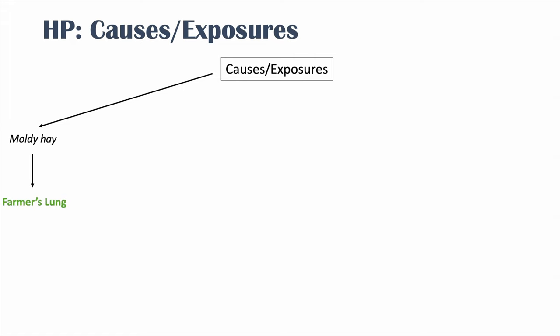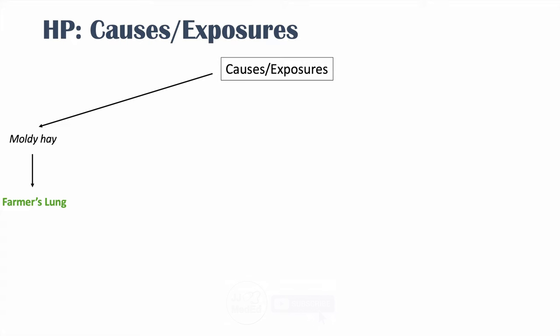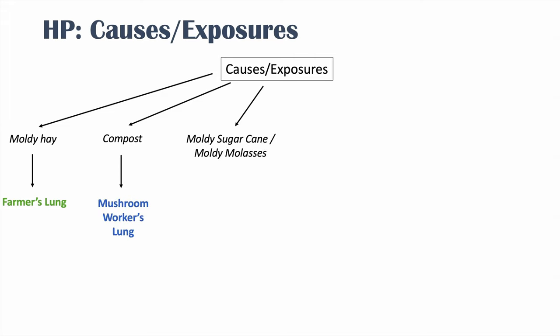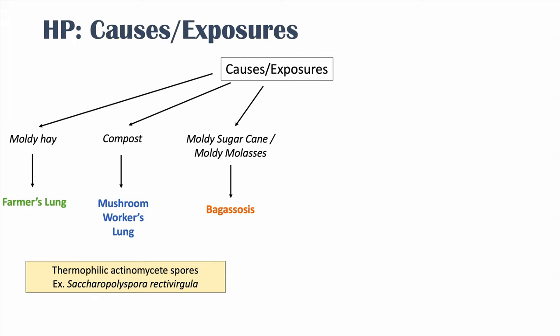One exposure is moldy hay, which leads to a condition known as farmer's lung. Another cause is compost, which leads to mushroom worker's lung. There can also be exposure to moldy sugarcane or moldy molasses, which leads to a condition known as bagasosis. All three of these involve exposure to particular thermophilic actinomycete spores — one species is known as Saccharopolyspora rectivergula.